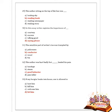Next question: the sensitive part of the writer — his toe — was trampled by whom? Given options are policeman, conductor, would, and foe. Option B is correct — the conductor trampled the sensitive part of the writer's toe.